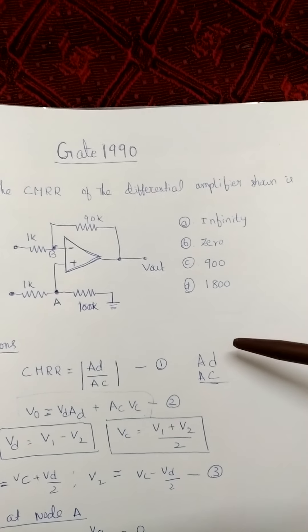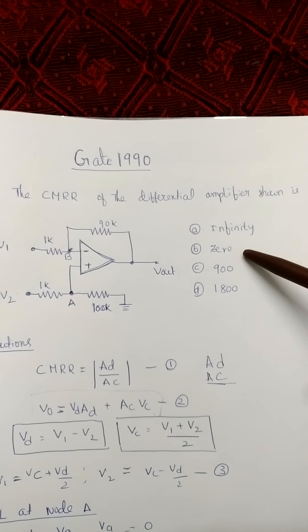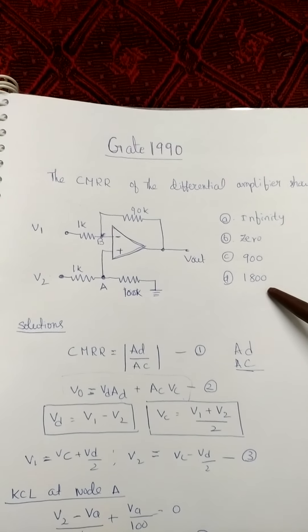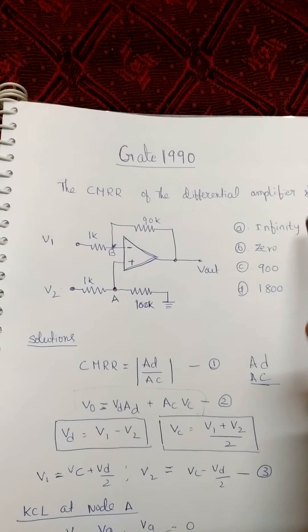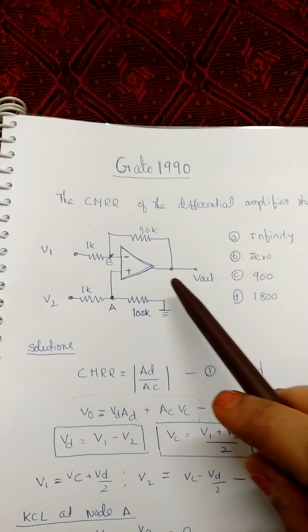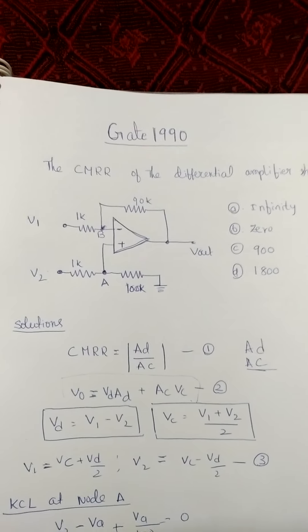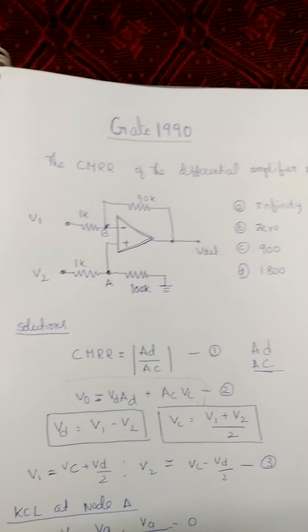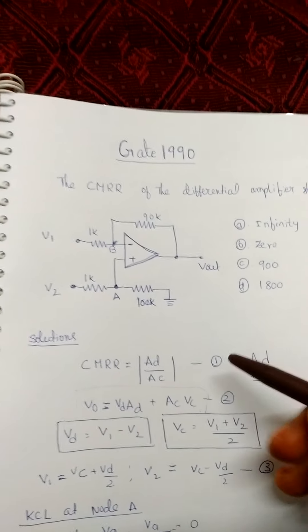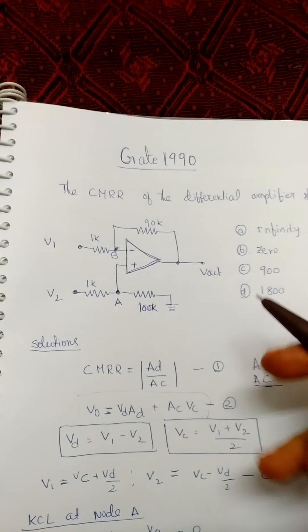There are four options: A is infinity, B is 0, C is 900, and D is 1800. In the given problem, we are considering the operational amplifier as an ideal case. Since it is not specifically mentioned otherwise, we can treat it as an ideal operational amplifier.